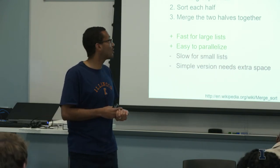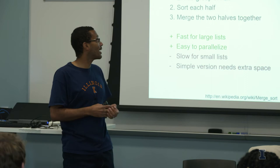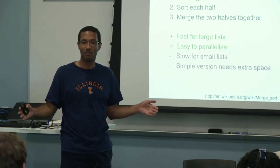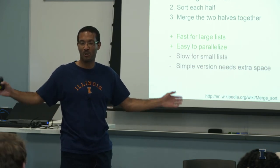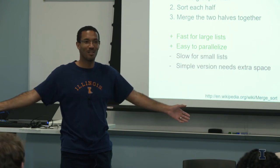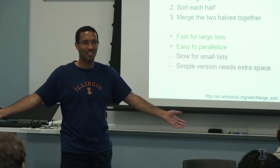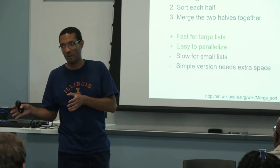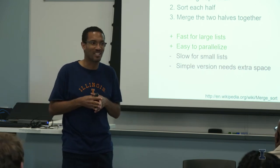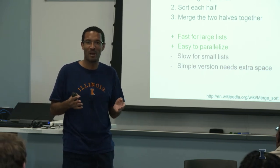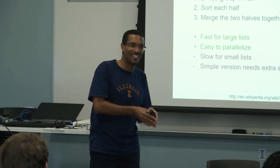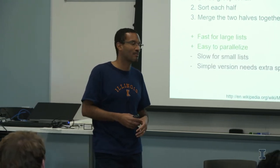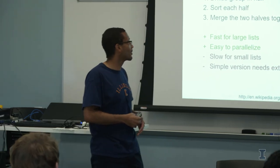One approach is called merge sort — a divide and conquer strategy. I'm going to divide the problem: sort 2 billion objects. I don't know how to sort 2 billion, but I know how to sort 1 billion and another 1 billion and merge those together. How do I sort 1 billion? Sort 500 million and 500 million, and keep dividing the list smaller and smaller.